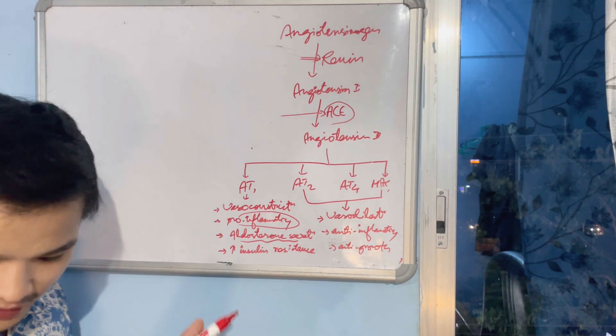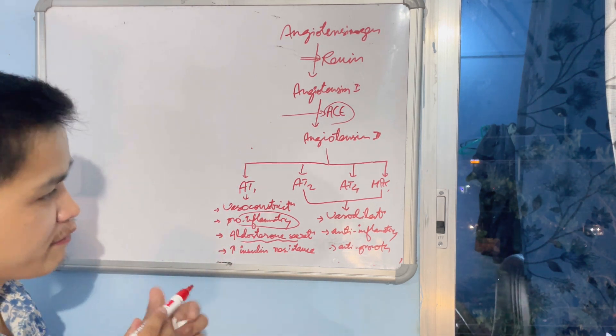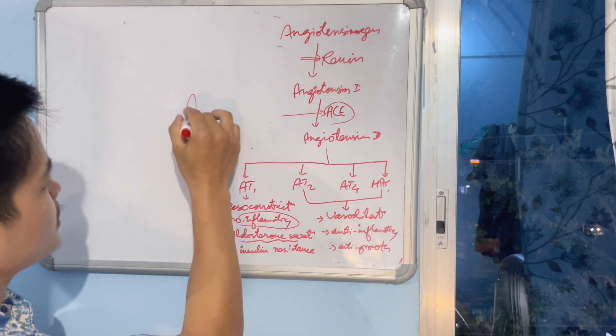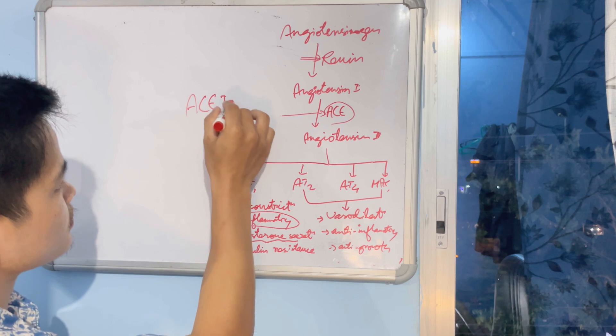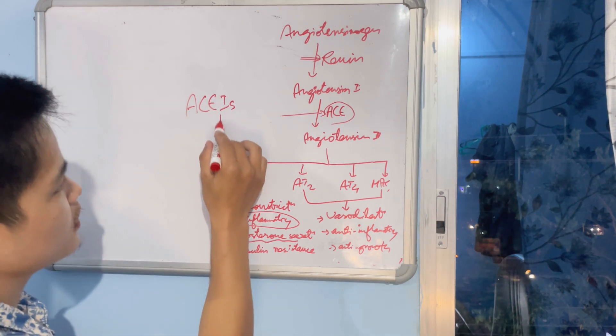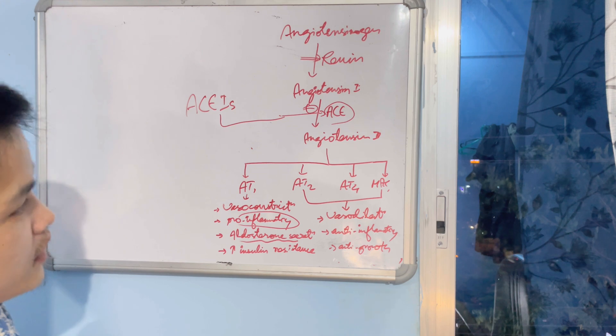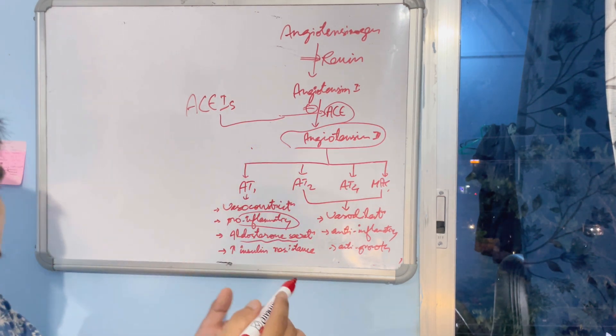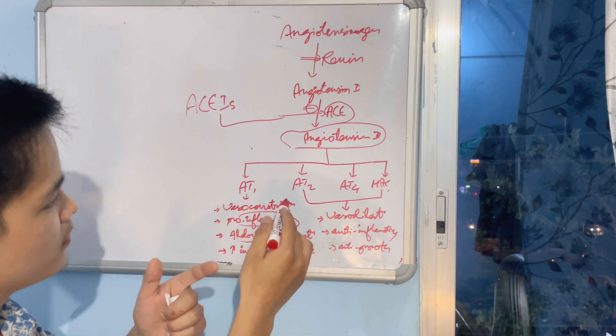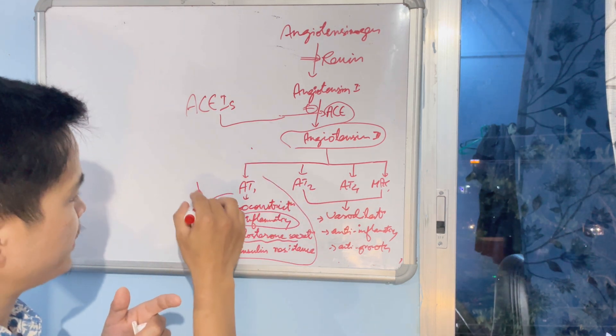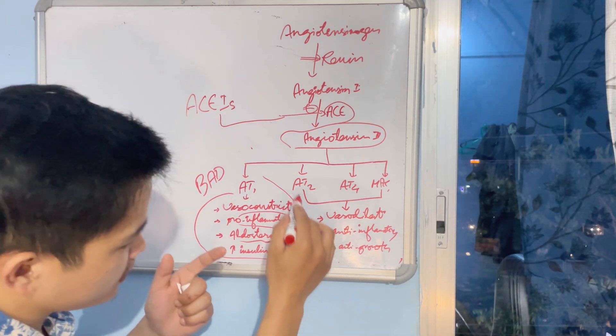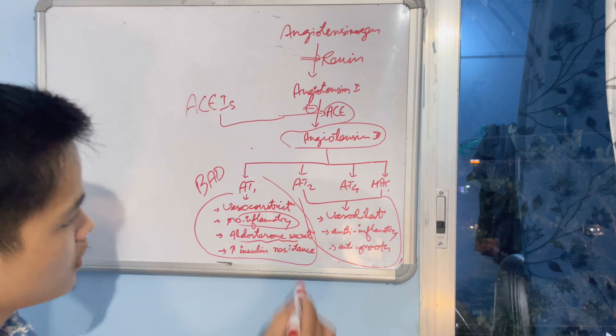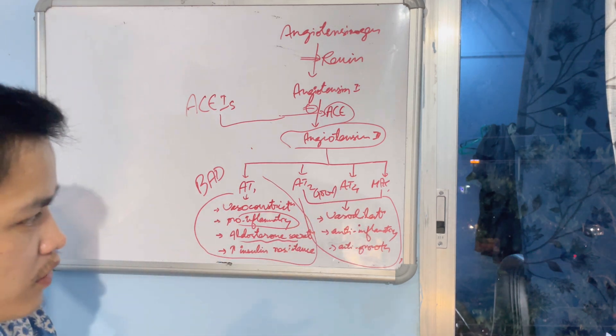Now to avoid this effect in hypertensive patients, we give drugs. One is ACE inhibitors. What it does: it will inhibit ACE. When ACE is inhibited, angiotensin II won't be formed. When angiotensin II is not formed, this bad effect will be gone. And this good effect, because AT2 and MAS are causing vasodilation, anti-inflammatory - this good effect will also be gone.